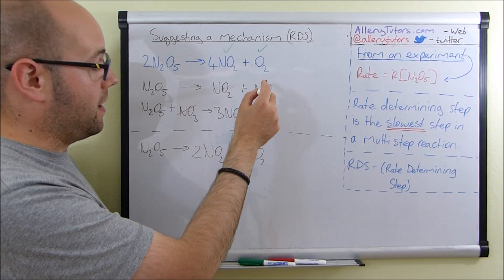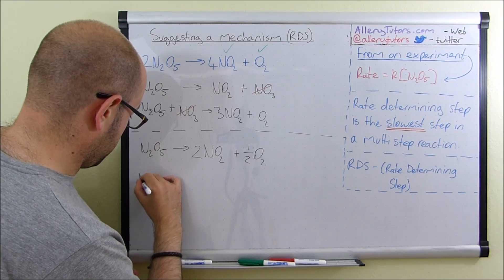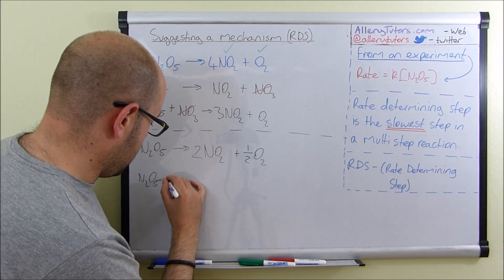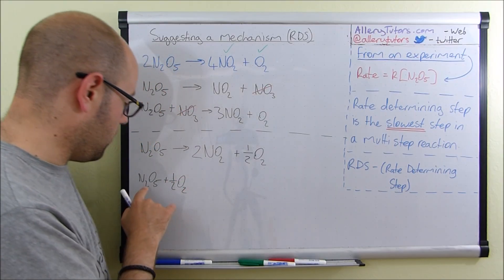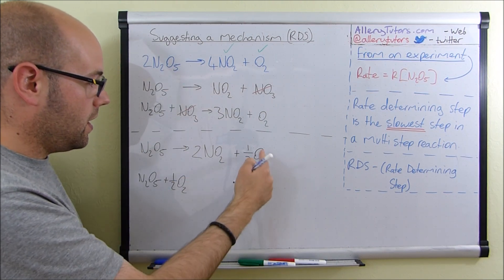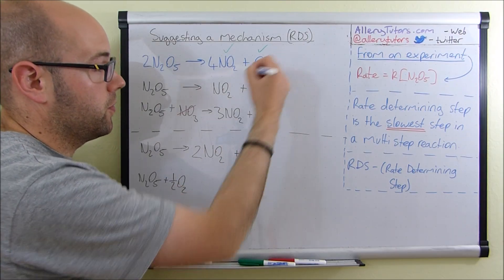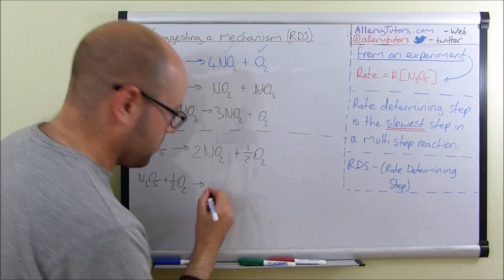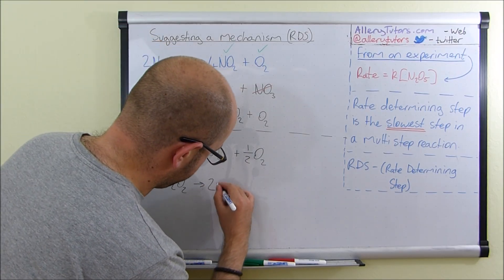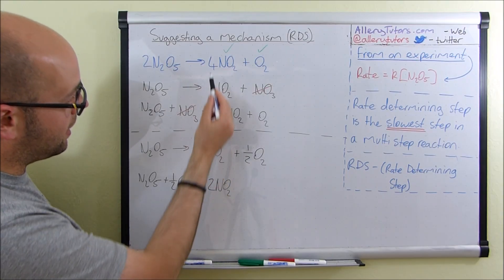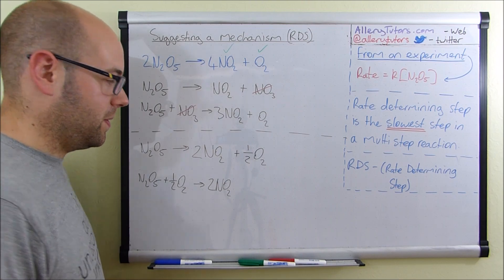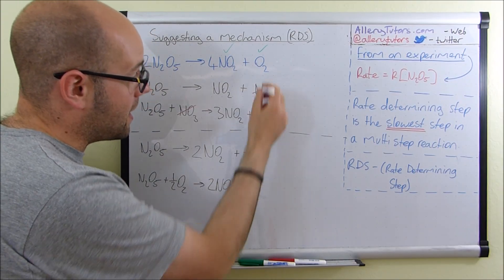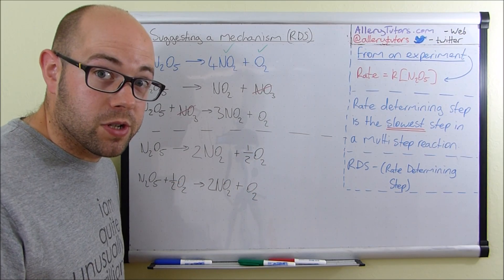For step two of mechanism 2, just like in mechanism 1, we need the intermediate to be used up. We put N₂O₅ on the left. We have ½O₂ from step one but we need a full mole of O₂, not just half. So the ½O₂ from step one reacts with the N₂O₅ in step two. This step also decomposes to give 2NO₂ — two plus two adds up to the four we need — plus another O₂. The ½O₂ from step one combines with the ½O₂ from step two to give one full mole of O₂ in the overall equation.